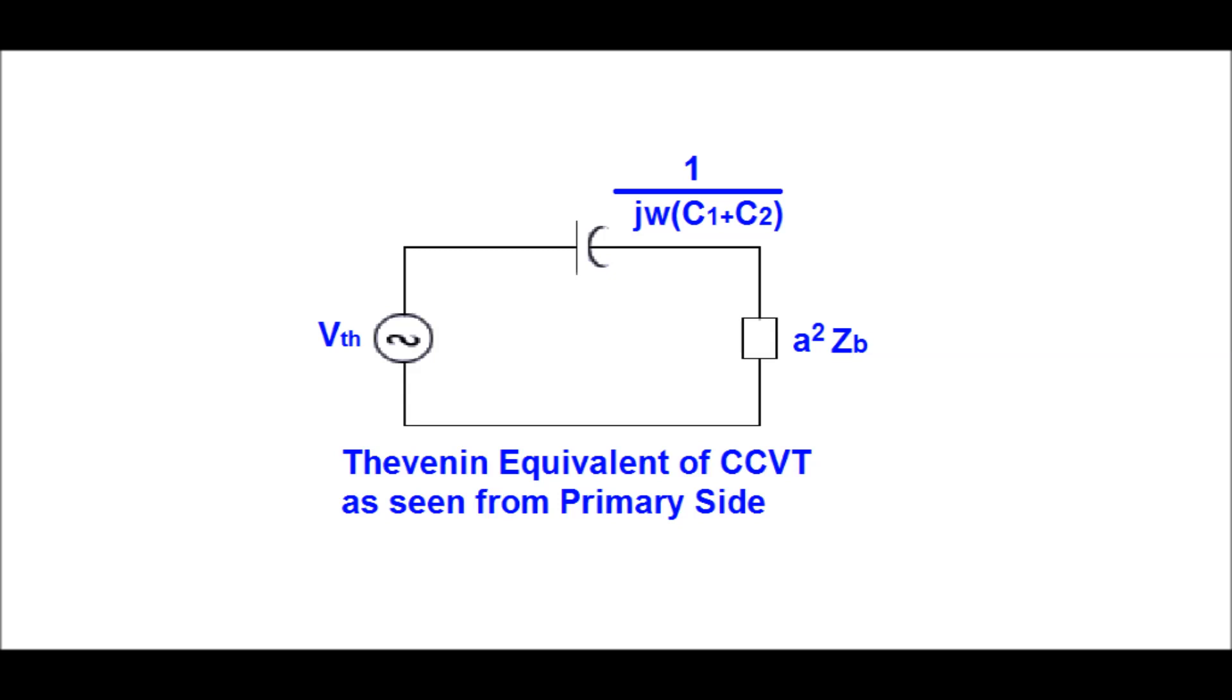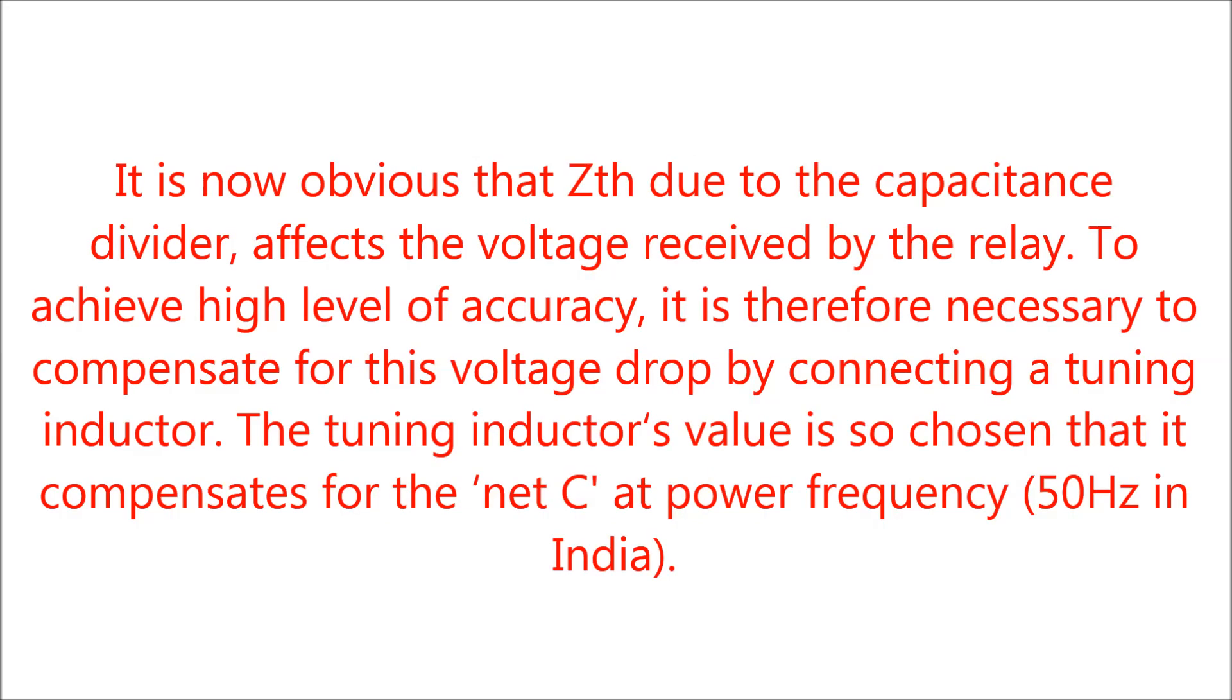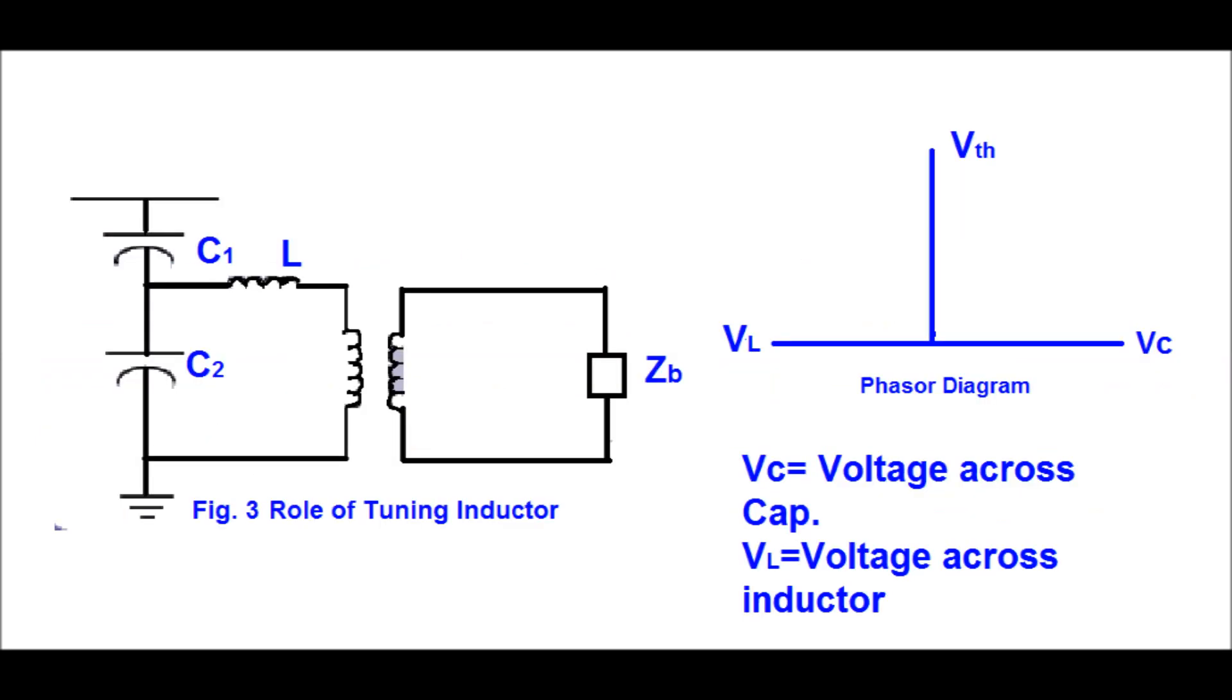Here VTH is the Thevenin's equivalent voltage, and 1/(jω(C1+C2)) is the equivalent capacitance. S²/ZB is the burden referred to the primary side. To nullify the voltage drop across the capacitance, a tuning inductor L has been introduced in the equivalent circuit to compensate for the voltage drop across VC.